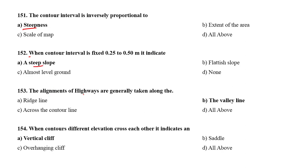The alignment of highways are generally taken along the valley lines. When the contours of different elevations cross each other, it indicates a vertical cliff.